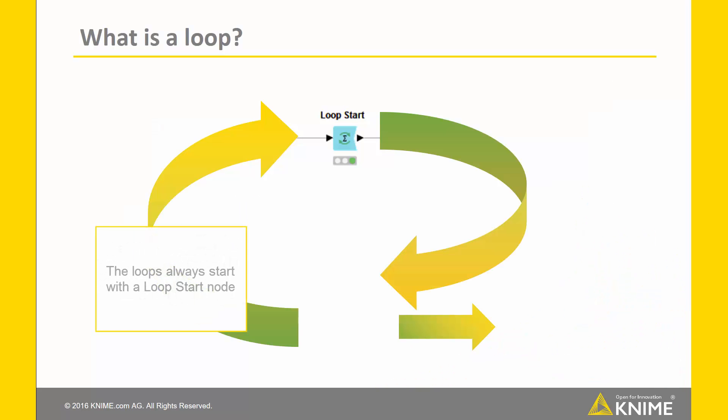The loop always starts with a loop start node. It's always the first node in your loop. After the loop start node, there is the body of your loop. And then the loop is closed with the loop end node.